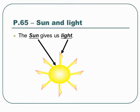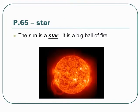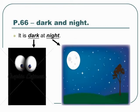Sun and light. The Sun gives us light. The Sun is a star — it is a big ball of fire. Dark and night. It is dark at night.